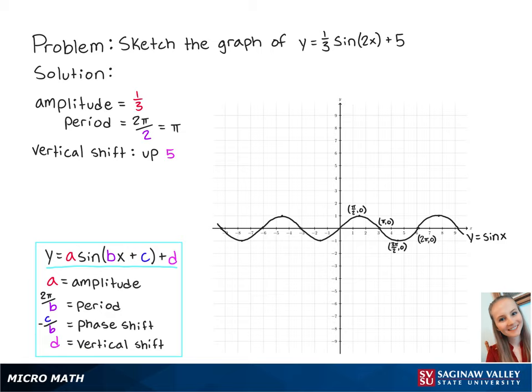Next, we're going to plot and label the important points of the graph. Since there's a vertical shift up 5, the first point will be at (0, 5), and since the period is equal to π, the graph will be compressed by a factor of 1/2.